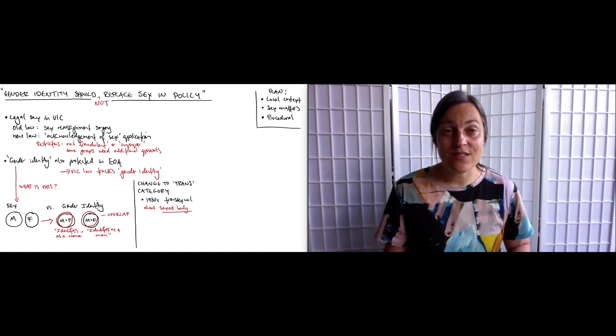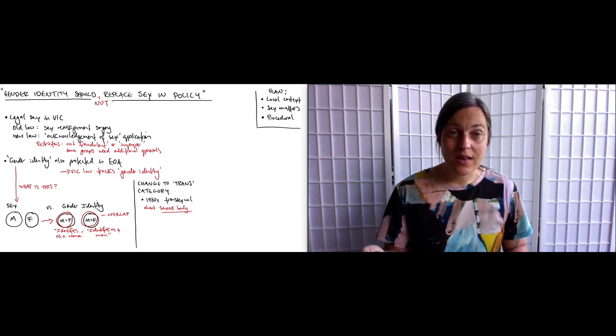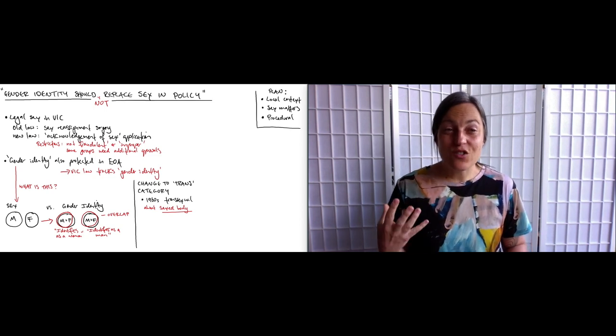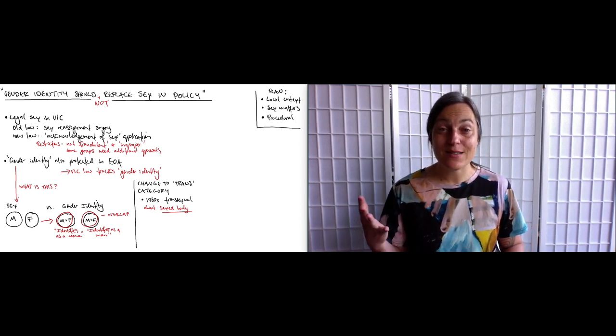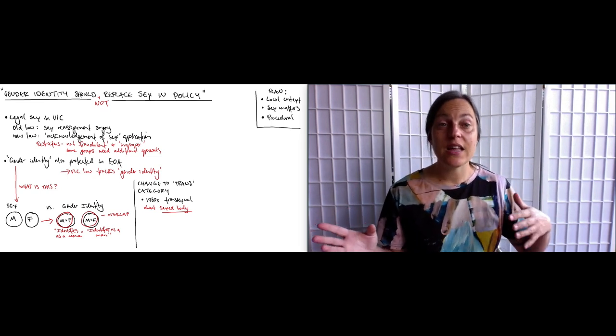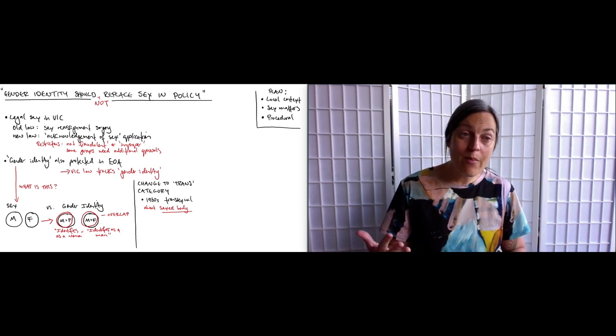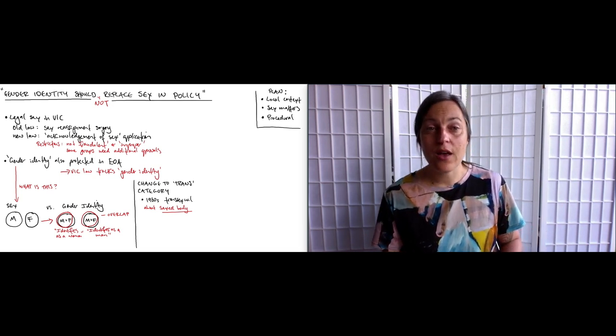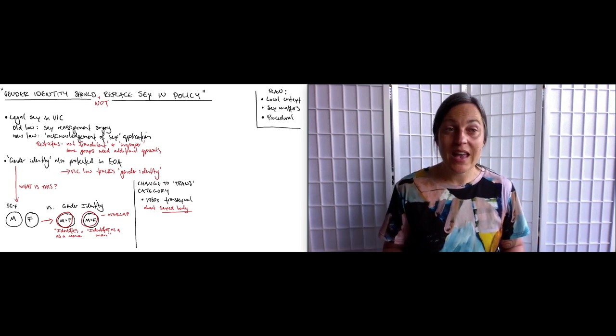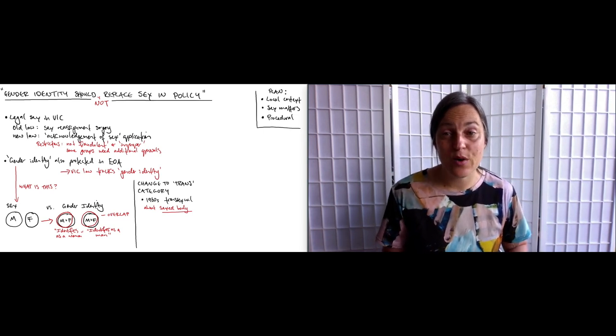In the 1960s through the late 1980s, to be trans was to be transsexual, and the population was almost entirely male people with extremely strong feelings about their sexed bodies being wrong, who wanted to transition surgically, medically and socially to live as women. Some passed as women and some did not, but all were clearly attempting to be read as feminine. This category has an underlying trait, something like severe dysphoria about the sexed body. And that is no longer the underlying trait.